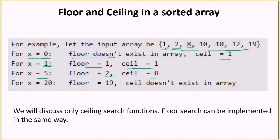For x equal to 20, the floor will be 19 which is the biggest element in this array, since 20 is greater than all the elements. So ceiling doesn't exist. I think you must now be clear with the definition of what floor and ceiling are.